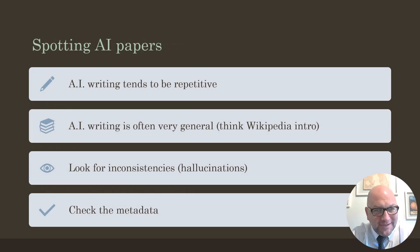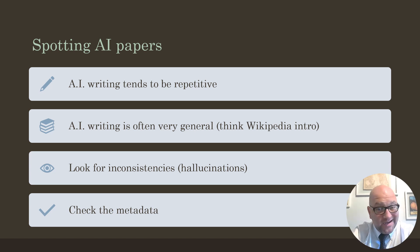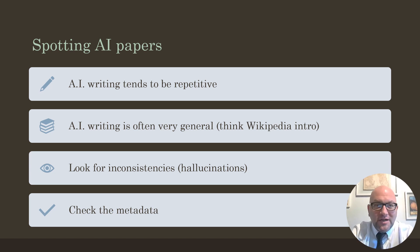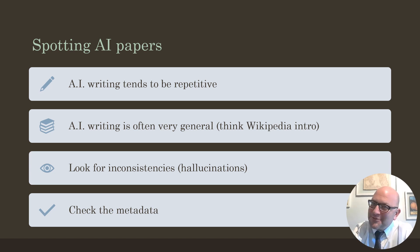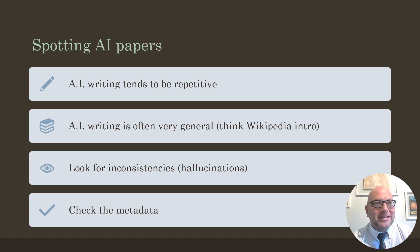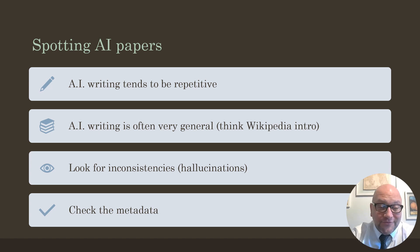Spotting AI papers when you're reading them: AI writing tends to be very repetitive because it comes up with a list of ideas, and the first, second, and third paragraphs tend to be the exact same thing just reordered. I know that a lot of our students who maybe didn't do all the readings have papers that look a lot like that too — but if it's highly repetitive, with three points just rearranged, that's one of the things AI does often.